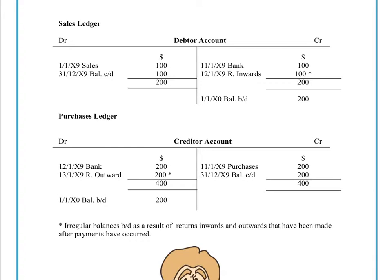Occasionally we'll get an irregular transaction with a balance brought down on the debit side. So why does this occur? Well, basically the simple answer is it's a delay in time.